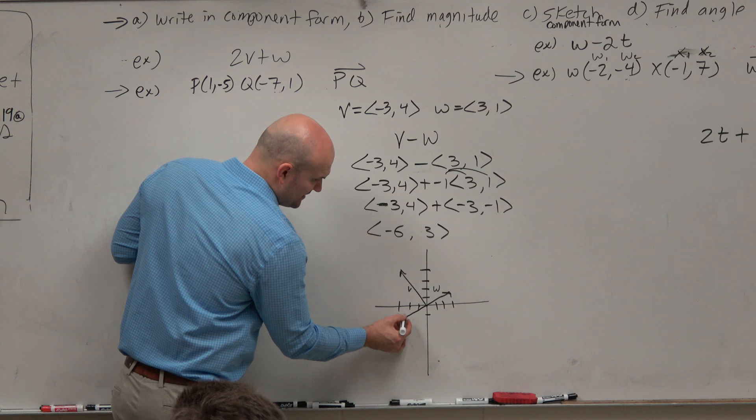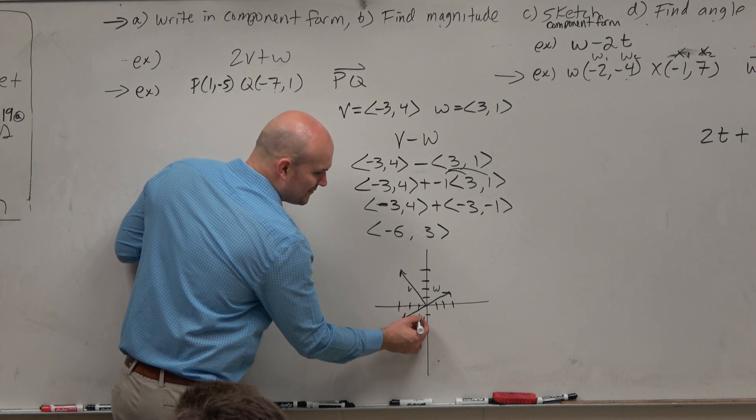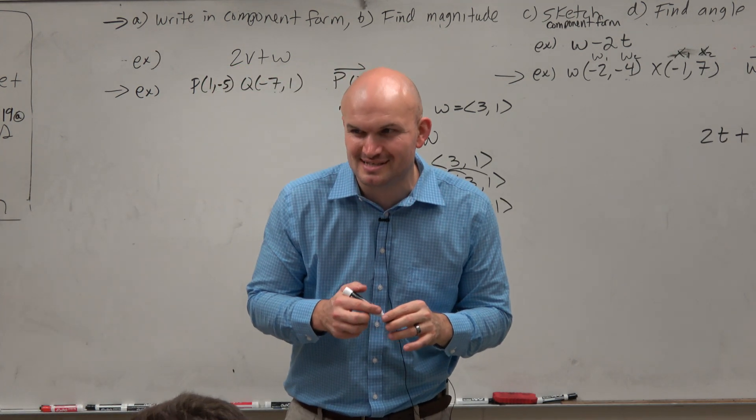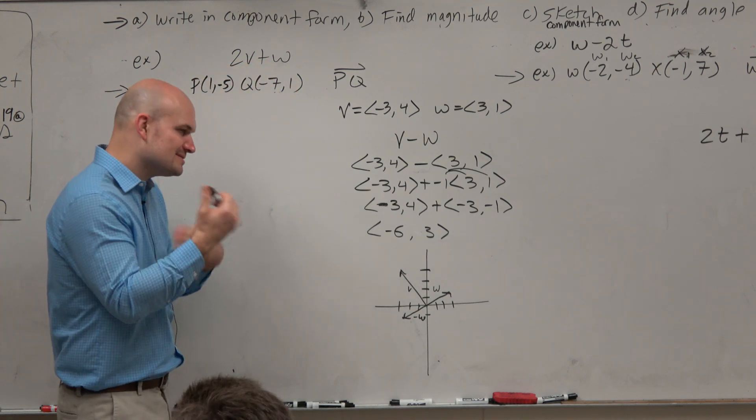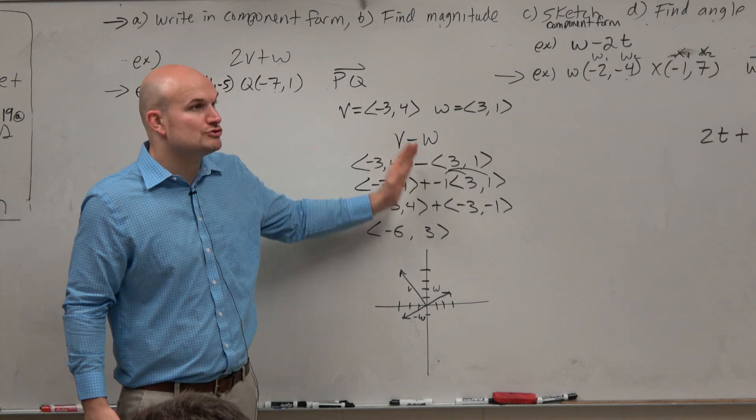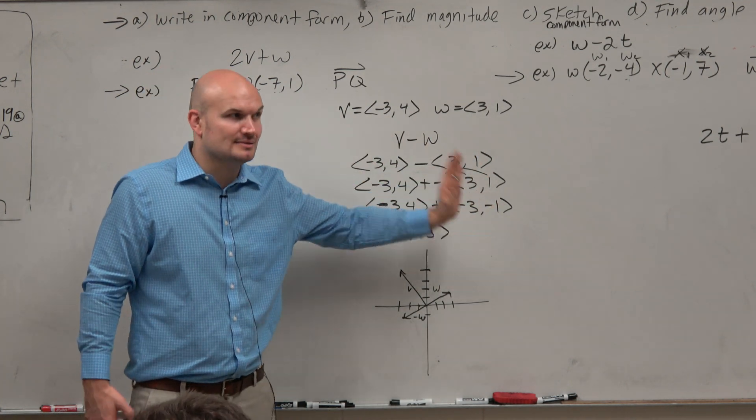So it's actually a reflection about the origin. Which is a good reminder of the same thing like that we have for what type of functions? Odd functions. Odd functions are reflected about the origin, right? Remember, just a little good old day. Because, yeah, you're reflecting about the x and the y, right? Because you're distributing that negative to both components, to the x and the y, OK?